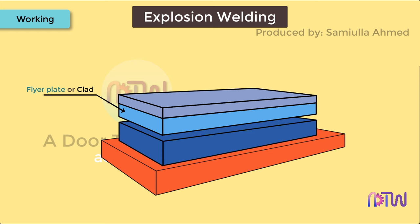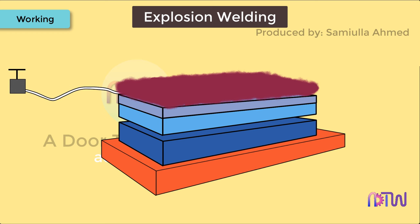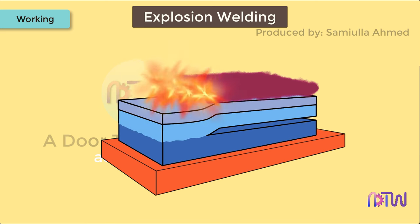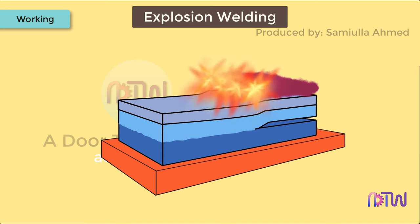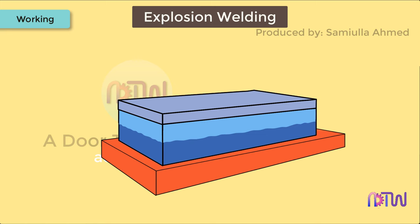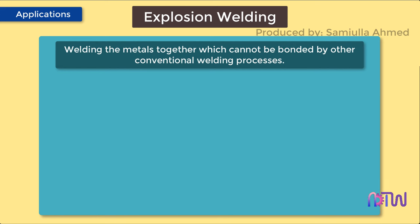The prepared explosives are packed in a box-like structure having the same size as the weld surface, with a detonator placed at one side to initiate the explosion. This explosive assembly is placed over the buffer plate. The detonator ignites the explosives, generating a high pressure wave. This wave causes the flyer plate to accelerate at very high velocity, causing it to deform plastically at the interface between the base and the flyer plate, thus forming a metallurgical bond stronger than the parent metal.